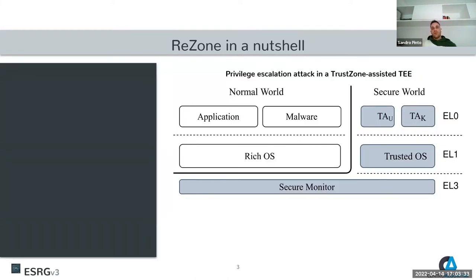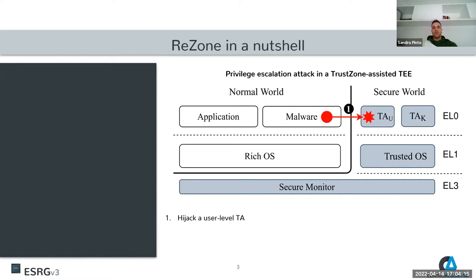A particular observation from that study was that the majority of reported vulnerabilities resulted from architectural flaws highly linked with the excess of trust and privilege of the TEE. There was a particular researcher, Gal Beniamini, who was the worst nightmare for Qualcomm between 2015 and 2017. He demonstrated that on the Qualcomm TEE, a normal world application without any kind of privilege could hijack a trusted application, or even worse, hijack the trusted operating system.